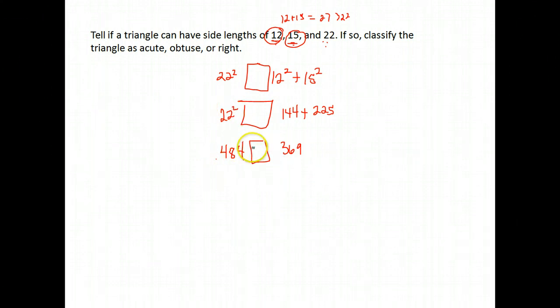So this is my side over here, 484 is bigger than 369. So if it's bigger than 369, then the angle is bigger than 90, making this an obtuse triangle.